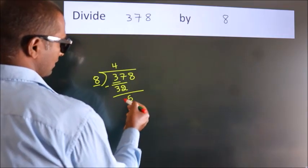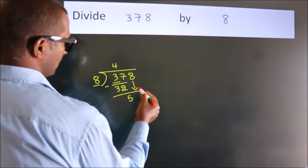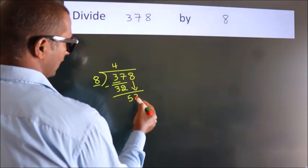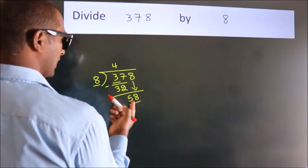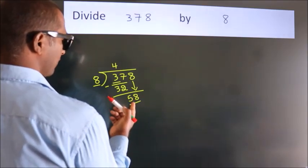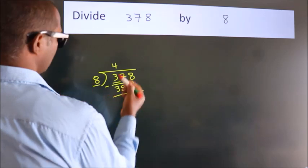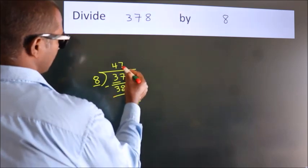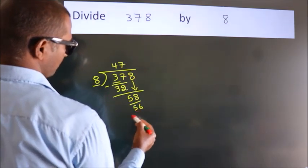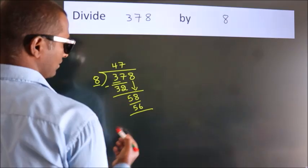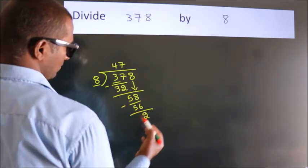After this, bring down the beside number. So bring down 8, giving us 58. A number close to 58 in the 8 times table is 8 sevens, 56. Now we subtract, we get 2.